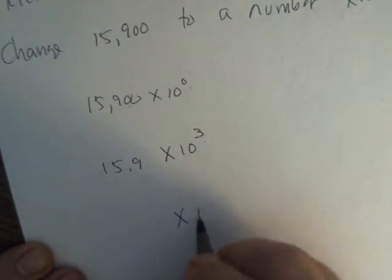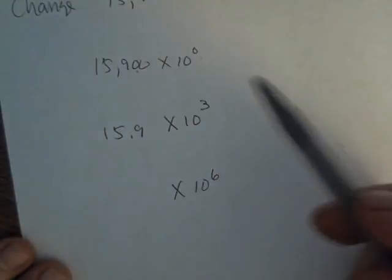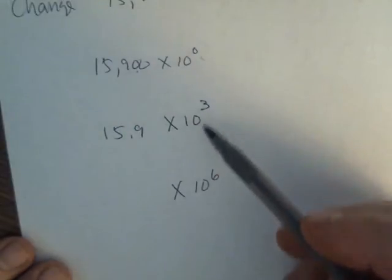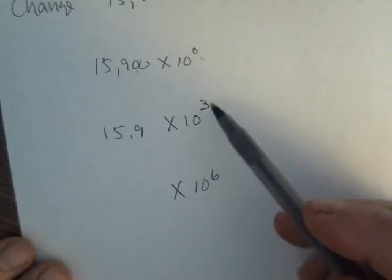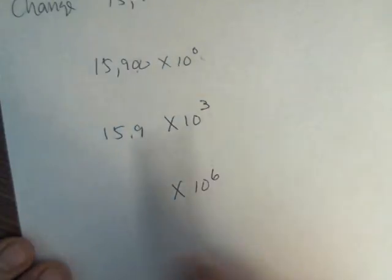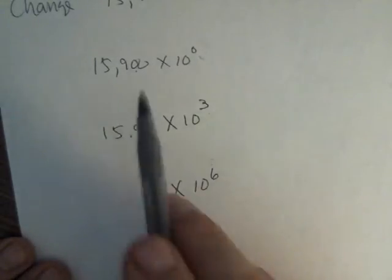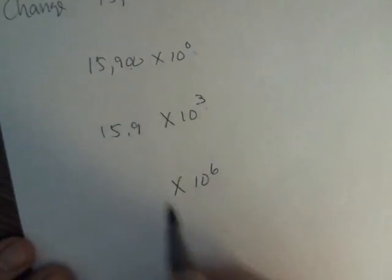Now if I want to go on and go to times 10 to the 6th, I can do it either from the original number or from this number. Now I am again adding 3 to the exponent, which means I move the decimal in this number 1, 2, 3 to the left. Since I only have 2 places, I must add a 0.